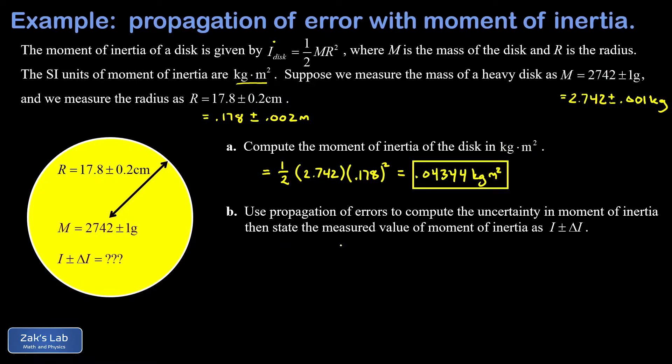We want to get the uncertainty in this moment of inertia by using propagation of error. Because moment of inertia is proportional to this measured quantity, the mass, and then the square of the radius, our propagation of errors formula looks like this.